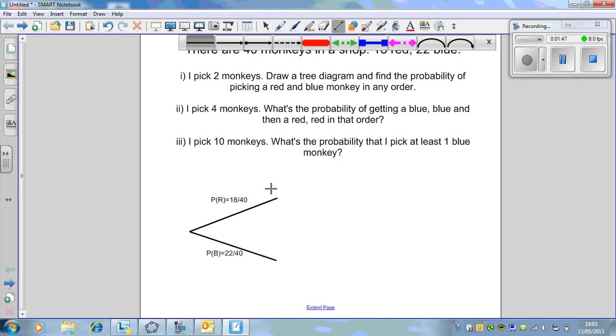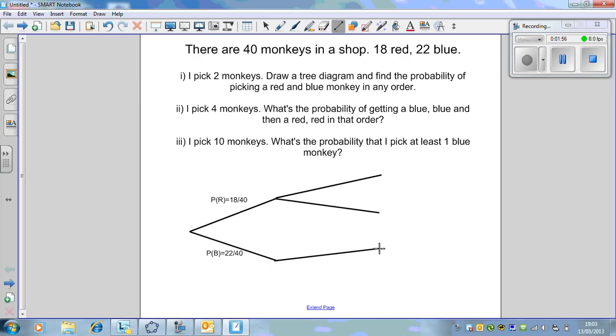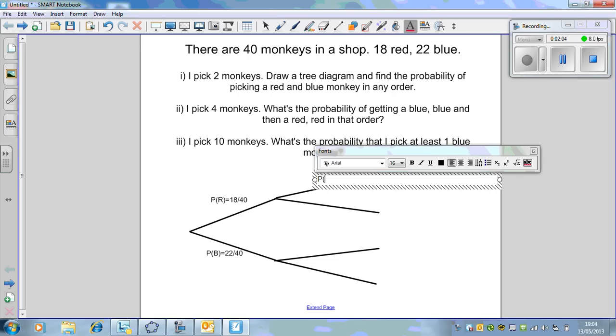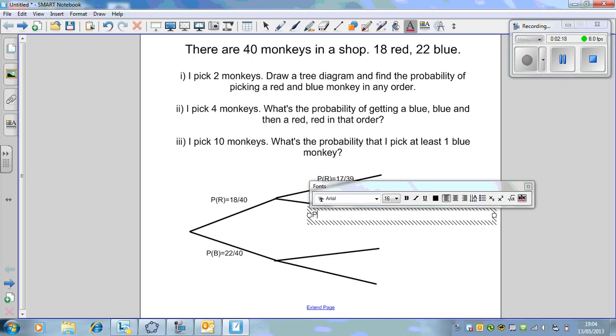We won't simplify them yet. It becomes a bit easier to simplify at the end. The probability of blue is 22 out of 40. That's the first branch, the first monkey has been picked. Now we need to do the second monkey.